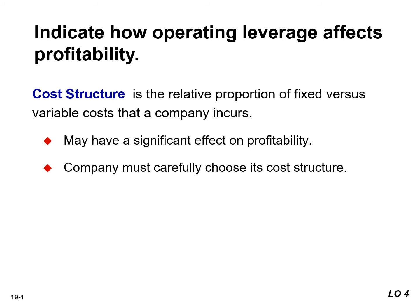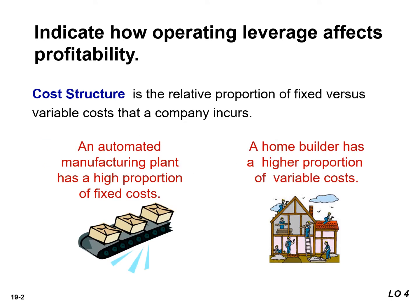Cost structure refers to the relative proportion of fixed versus variable costs that a company incurs. Cost structure can have a significant effect on profitability. An automated manufacturing plant has a high proportion of fixed costs, whereas a home builder has a higher proportion of variable costs.